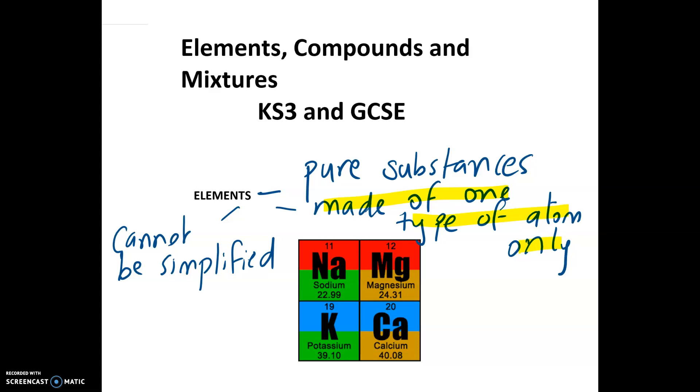Now these, if you look at these things here, they are called symbols. So these are the symbols for the elements that are found on the periodic table.